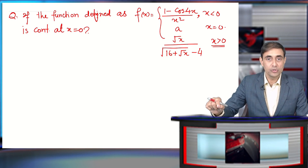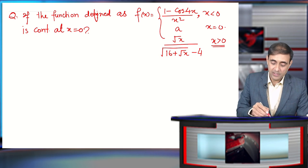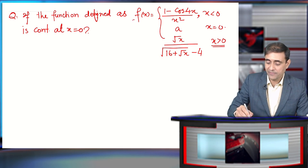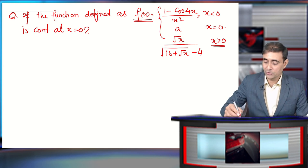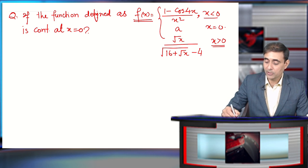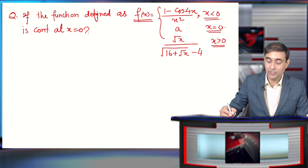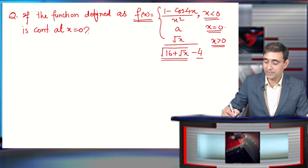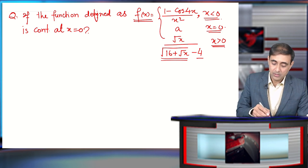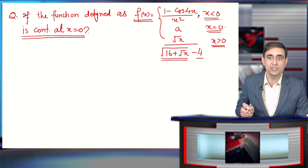Let us see one more question on continuity. If the function f(x) is defined as: (1 - cos 4x) / x² for x less than 0, equal to 'a' if x equals 0, and root(x) / (root(16 + root(x)) - 4) if x is greater than 0 — is this function continuous at 0? Let us check.